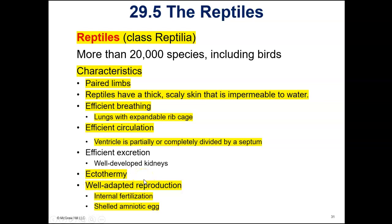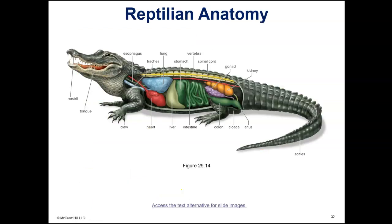In the crocodiles and alligators, they have a divider so they practically have two ventricles — the oxygenated and deoxygenated blood is not mixed, making it almost like a four-chambered heart. But most reptiles just have a divided ventricle, so we still technically say they have a three-chambered heart. Reptiles are ectothermic, and they practice internal fertilization and, for the most part, external development. They do lay eggs most of the time, with a few exceptions.